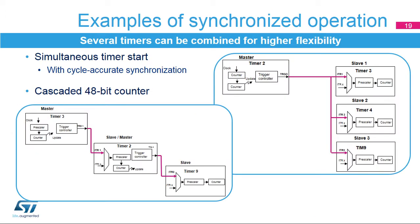This slide gives two examples of synchronized operation. The first example shows how four timers can be simultaneously started; a mechanism allows the master timer to start slightly delayed to compensate for the master-slave link delay and have all timers synchronized with cycle accuracy. By combining the channels of timers 2, 3, 4, and 9, it is possible to have up to 14 synchronized PWM channels. The second example shows how to create a 48-bit timer by cascading three timers: timer 3's counter holds the least significant 16 bits, timer 2 holds bits 16 to 31, and timer 9 holds bits 32 to 47.